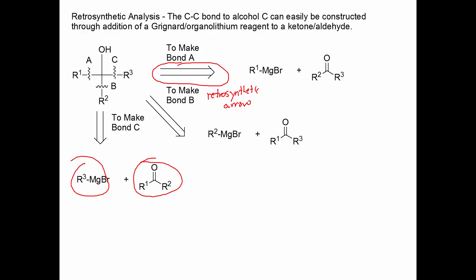If you have a secondary alcohol or a primary alcohol, you have fewer options since one of those R groups will be a hydrogen. We'll see later that we can add a hydrogen as a nucleophile as well, but not as a Grignard reagent. So how do we make this compound here using the Grignard reagent?